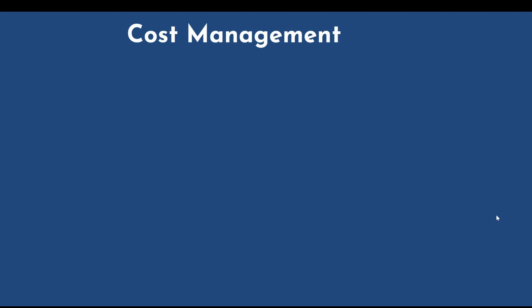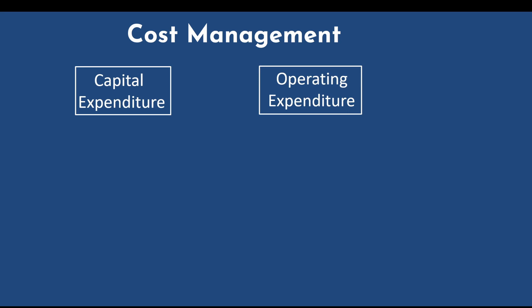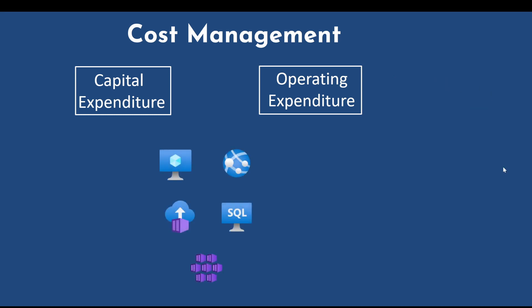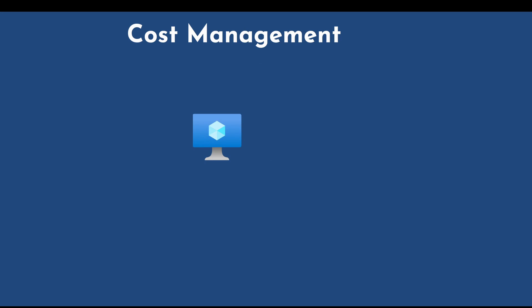Let's start with cost management introduction. We have already seen capital expenditure and operating expenditure earlier in this series — capital expenditure is the upfront cost you spend, and operating expenditure is the recurring cost over a specific period of time. A number of factors influence the cost of Azure resources, such as the type of resource, the settings of the resource, and the Azure region.